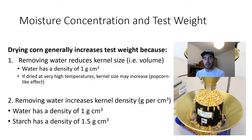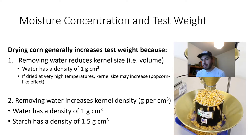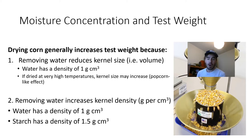A classic management practice to increase corn test weight is to dry that corn grain down. That can be accomplished either by delaying harvest and waiting for the sun and wind to dry grain out naturally before it's combined, or by placing harvested grain in a grain drying apparatus of some sort.